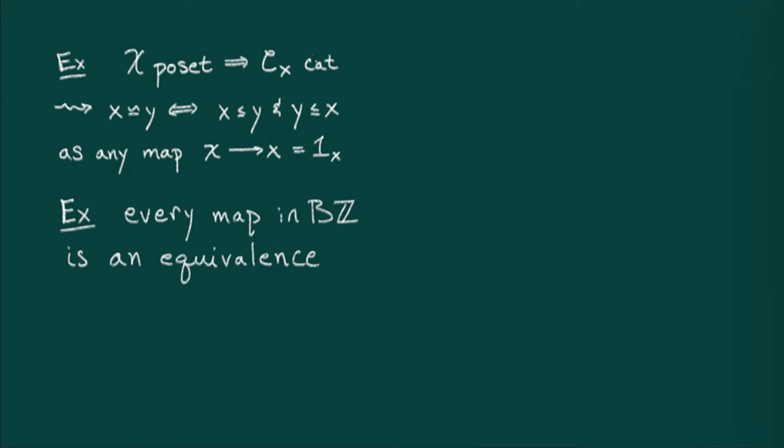If C came from the real numbers, x is equivalent to y precisely when they are equal. In general, equivalence does not coincide with equal.